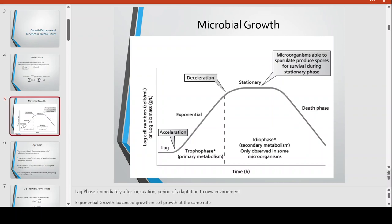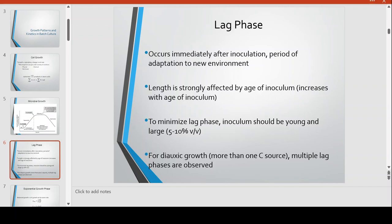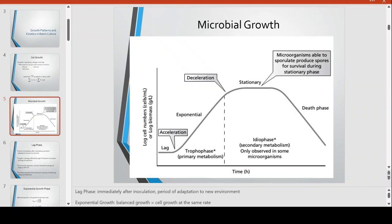The cells grow at the same rate during exponential growth. The lag and the exponential phase — this part of microbial growth — we call the trophic phase. This is also the phase where all metabolic pathways are primary metabolism, basically the utilization of glucose to produce energy and all the metabolic pathways necessary for living.